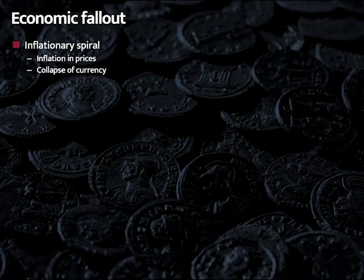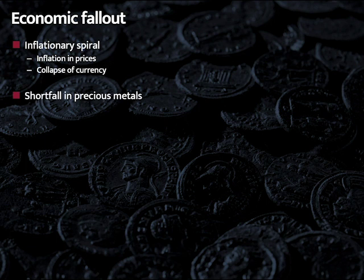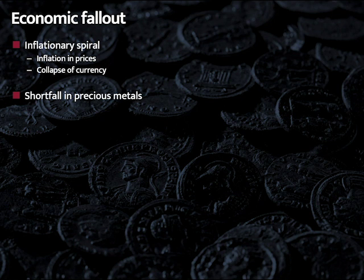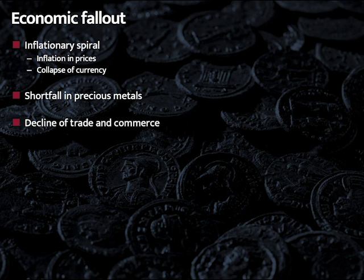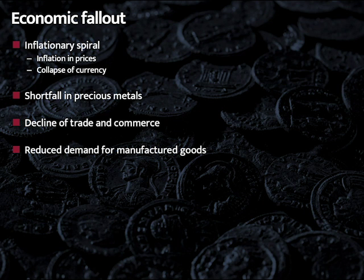The economic fallout includes an inflationary spiral that keeps feeding upon itself. There's a shortfall in precious metals as people hoard actual silver, gold, and electrum, as well as metals used in manufacture. The economy is not circulating, not moving. There's a decline in things being produced, things being purchased, and goods being moved from one place to another — everything comes grinding to a halt. Demand for manufactured goods goes down because people don't have money or coins, factories shut down, people are thrown out of work, and this cascades upon itself.